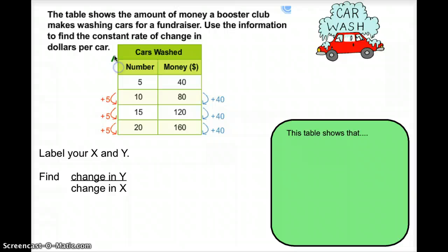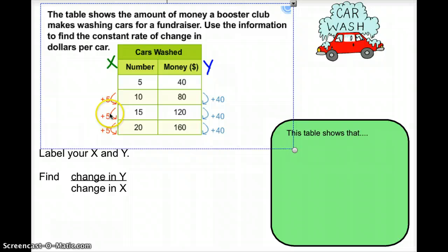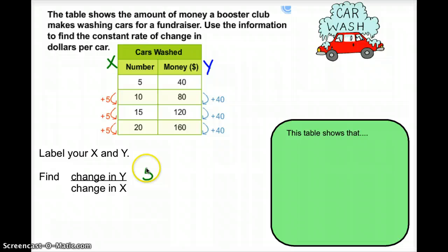They're given x, the number of cars, and you're given y, the money raised. And we're going to label our x and y and find the change in y over the change in x. Well, they've already done these arrows here for us. We see that x increases by 5 cars. Oh, and I put the x in the wrong place. You'll notice that the x goes on the bottom. So, 5 cars.